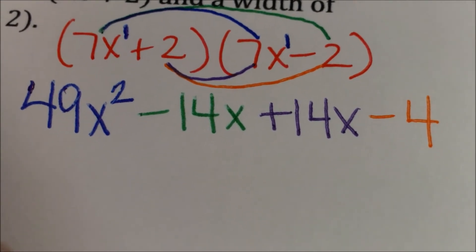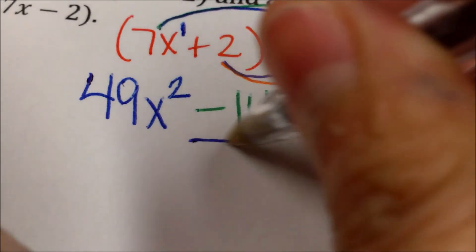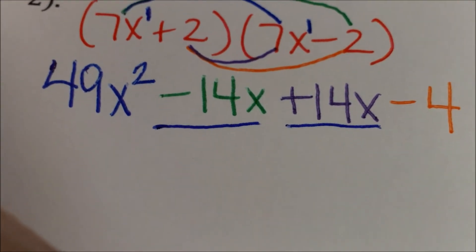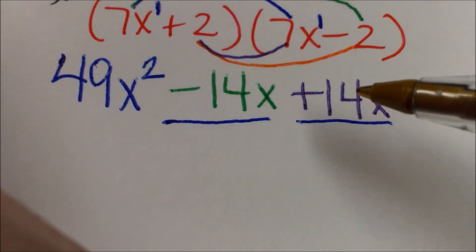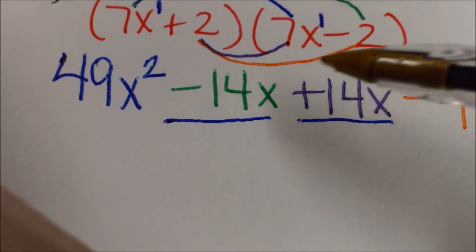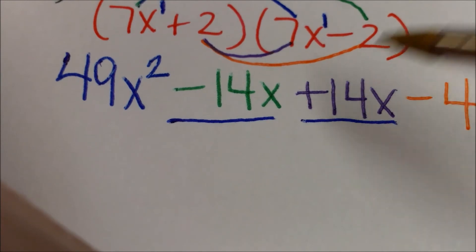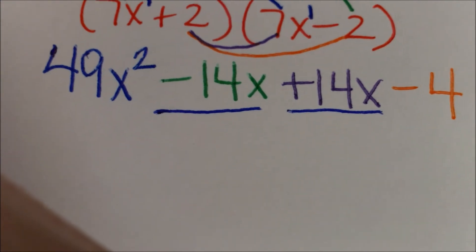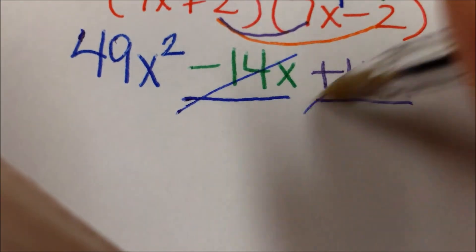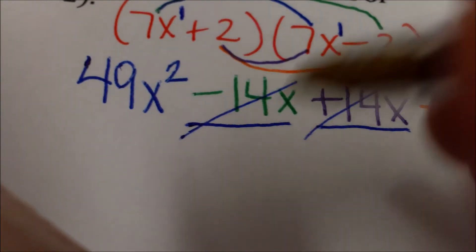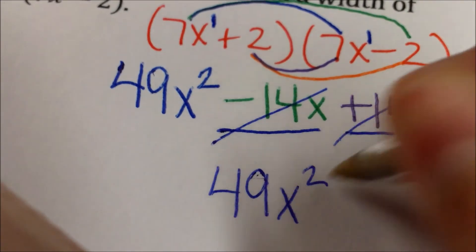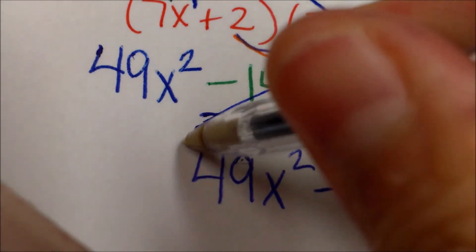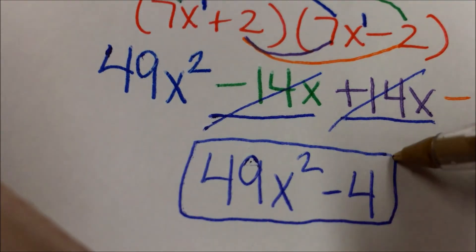Then we combine like terms. The like terms in this case are the negative 14x and the positive 14x, because they both have an x. But since they're different signs, you're going to subtract them. Negative 14 and positive 14 ends up being 0, and anything times 0 is going to be 0, so they end up canceling out. Then you're left with 49x squared minus 4. And that's it — you cannot combine those because one of them has a letter and the other one does not.